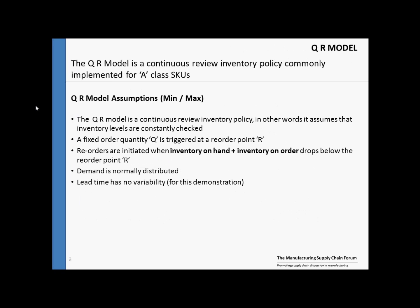Let's cover some assumptions of the Q-R model first. We assume inventory in the Q-R model is continuously checked. A fixed order Q is triggered at the reorder point R. We assume that reorders are triggered when the total inventory position falls below the reorder point. The total inventory position equals the sum of inventory on hand plus inventory on order. We assume that demand is normally distributed and we also assume in this presentation that lead time has no variability. The reason we do this is to simplify the safety stock calculation for this demonstration.